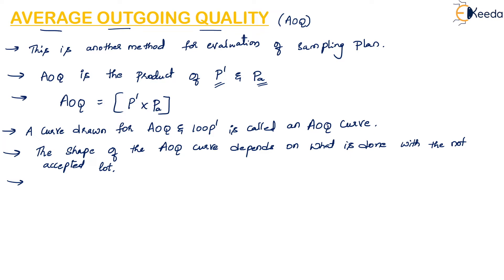If you find that there are many defectives in the lot and you subject the lot to 100% inspection, and all the defective pieces in that lot are replaced by good pieces and returned with a 100% good lot, then such a plan is called an acceptance rectification plan.